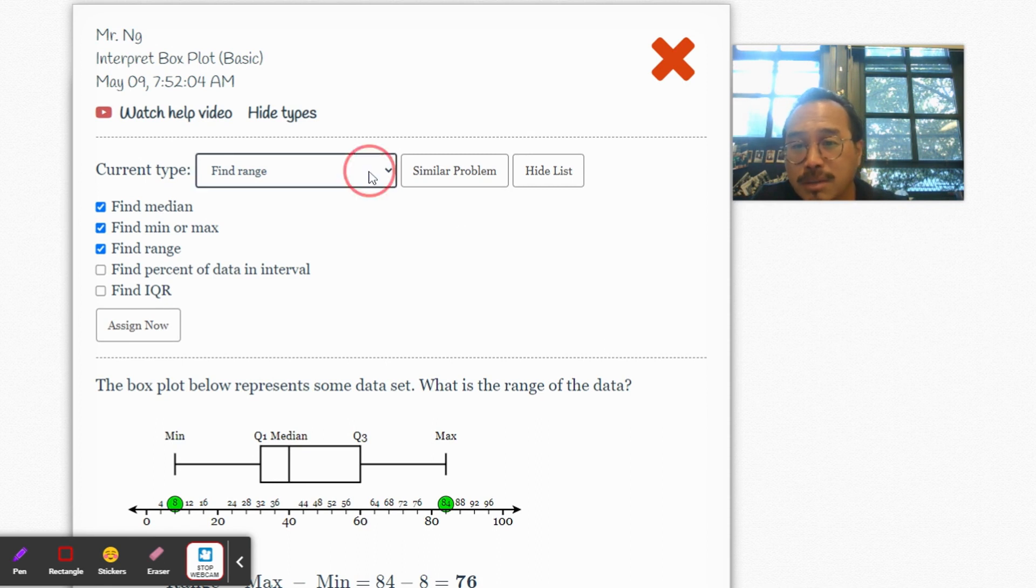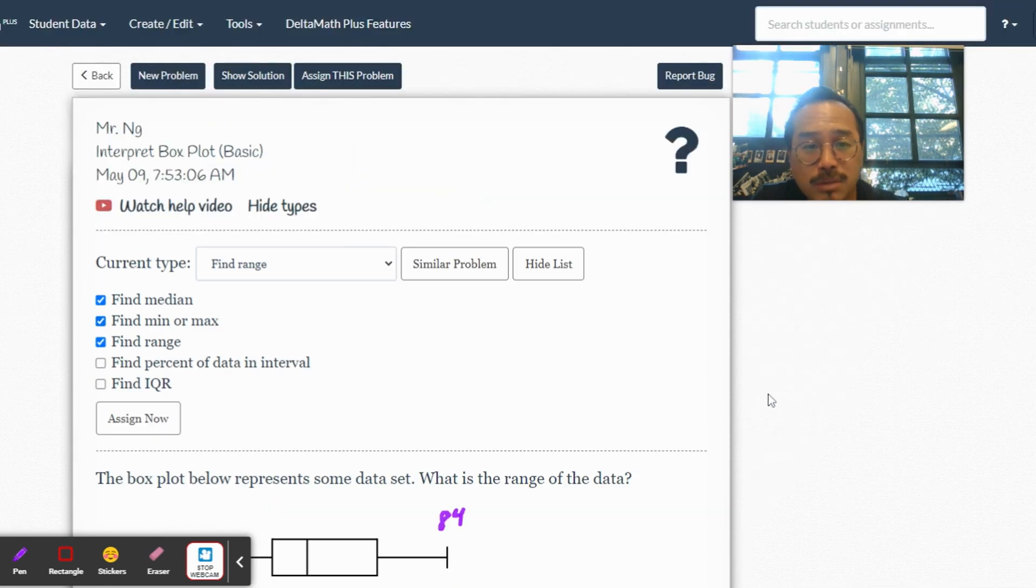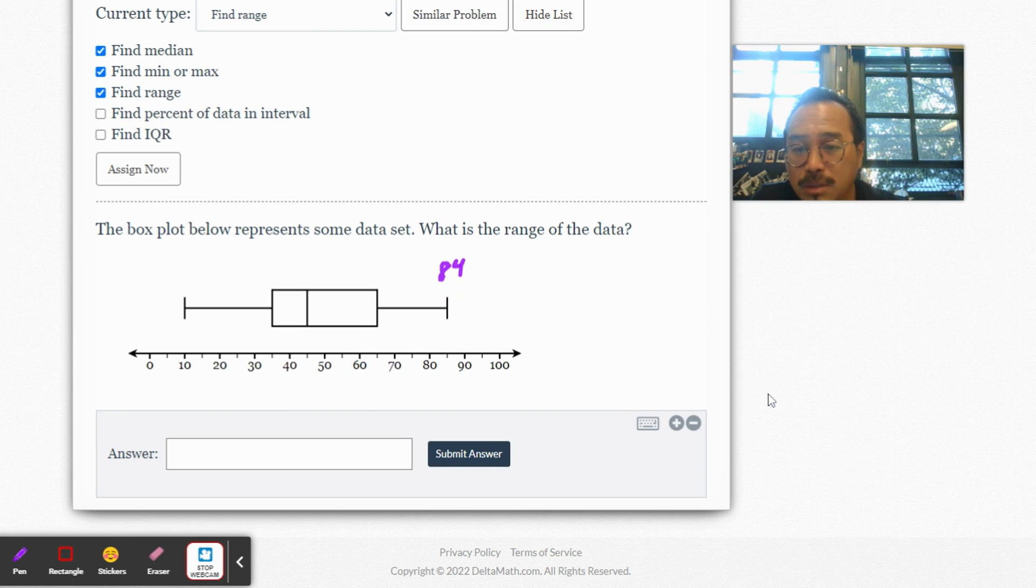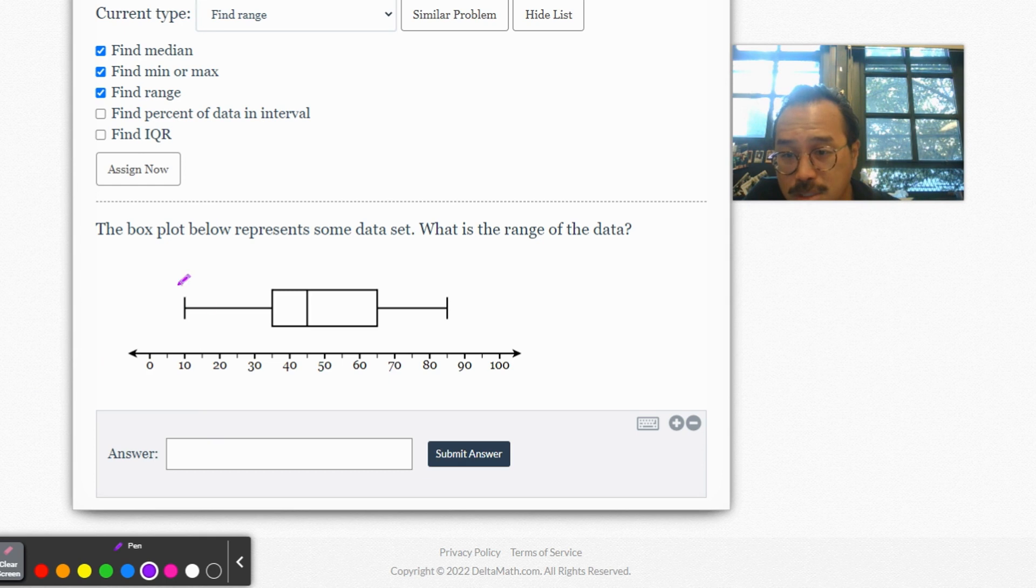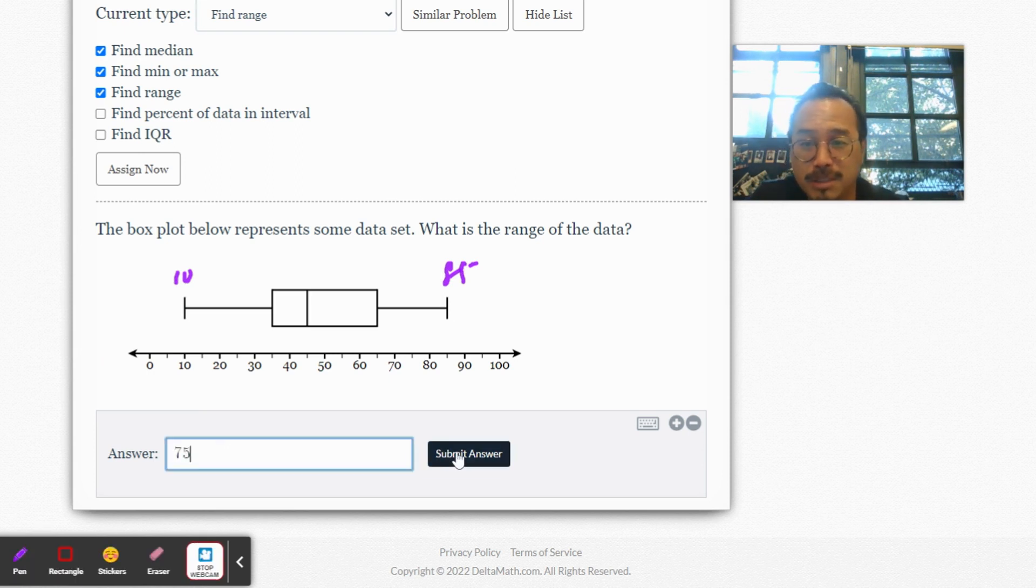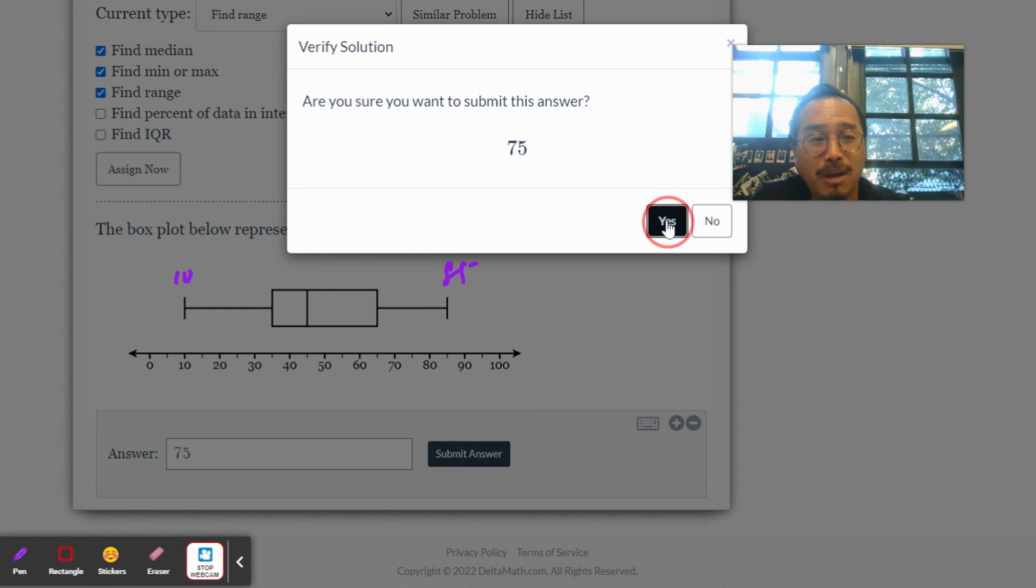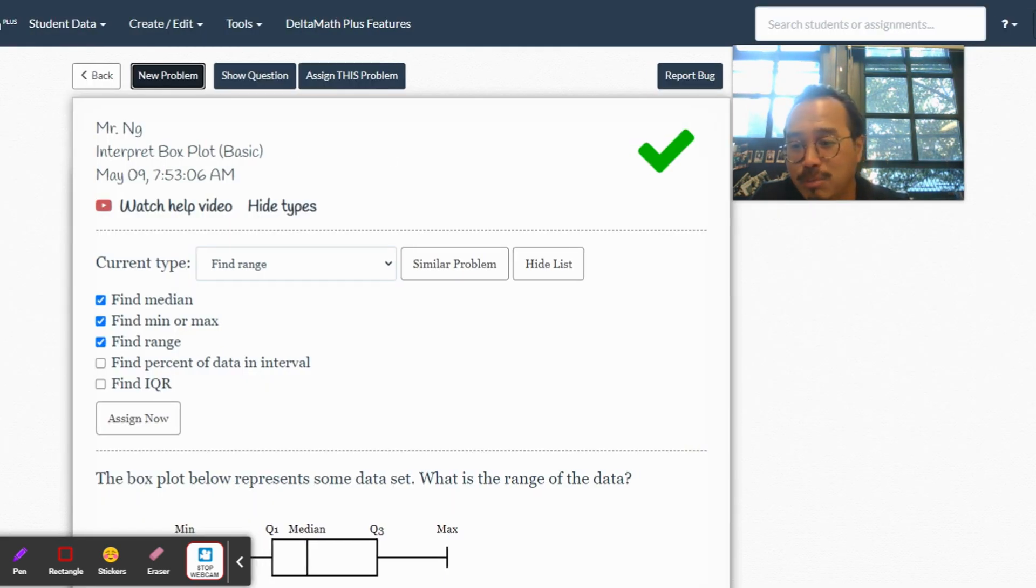I'm going to do one more. Let's look at this one. What's the range? A little bit easier this time. So this is 10, this is 85, so that's 75. I'm still kind of mad right now as you can see. All right, done. Moving on.